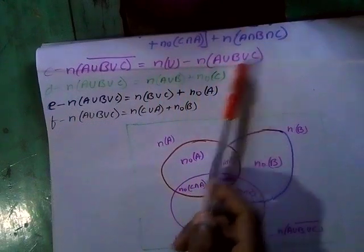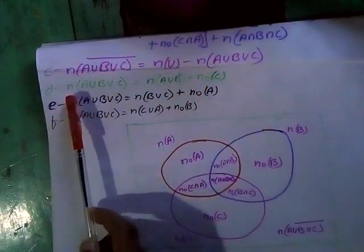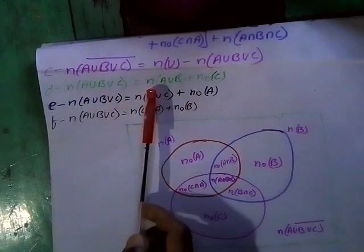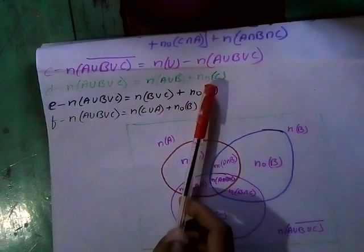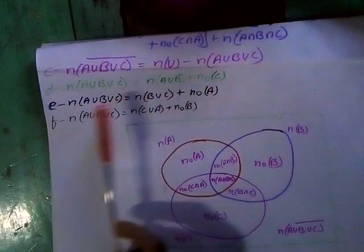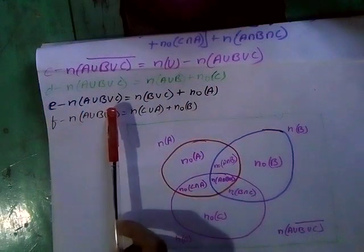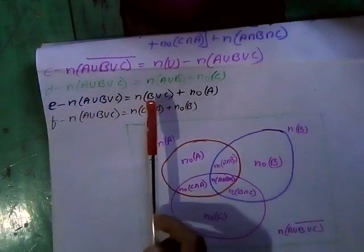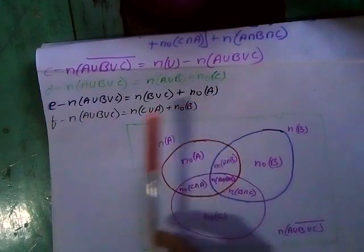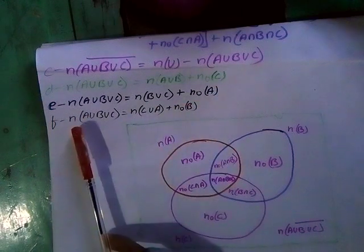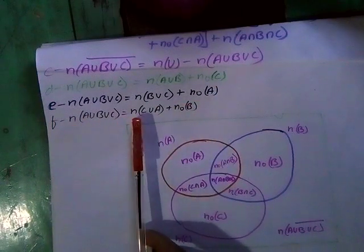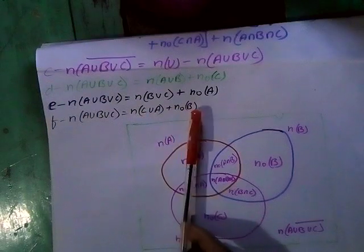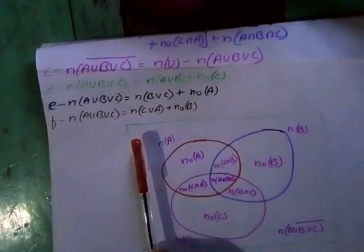N A union B union C equals N A union B plus N not C. Also, N A union B union C equals N B union C plus N not A, and N A union B union C equals N C union A plus N not B.